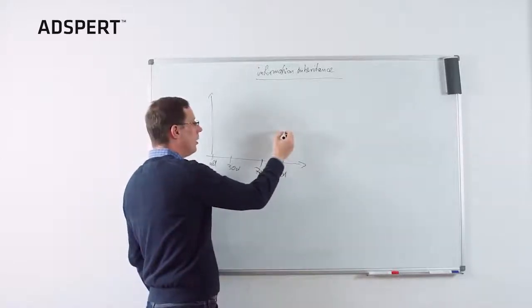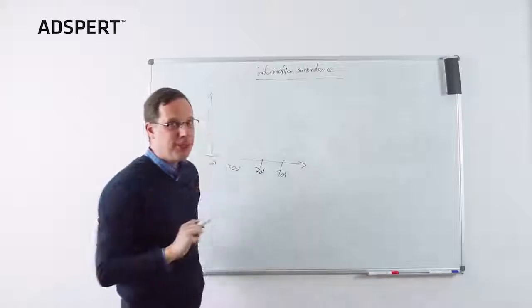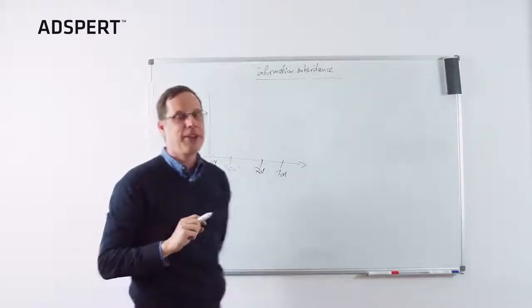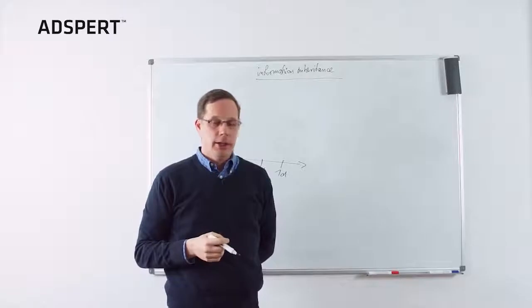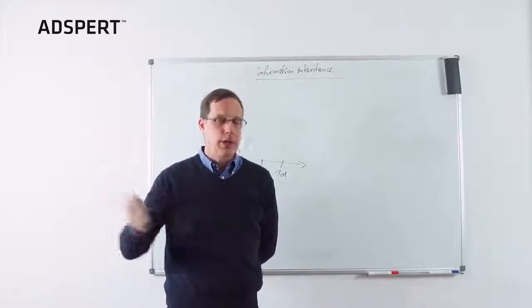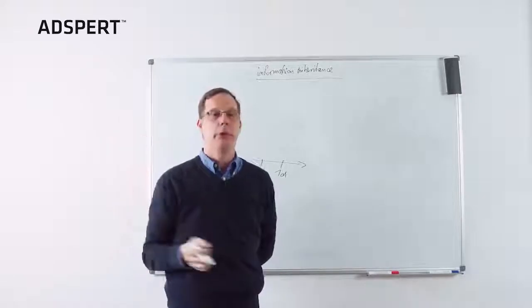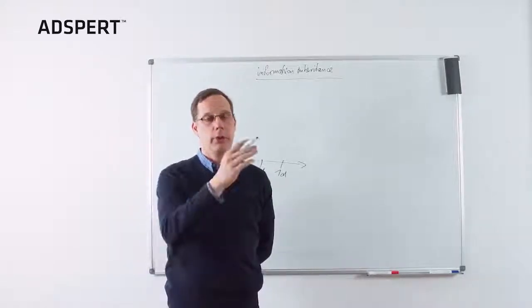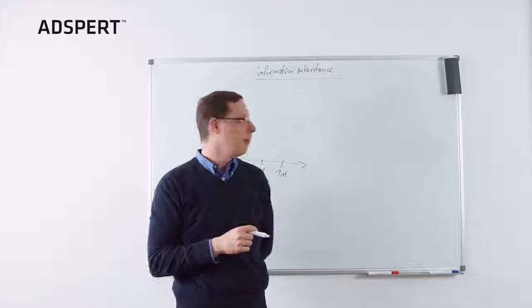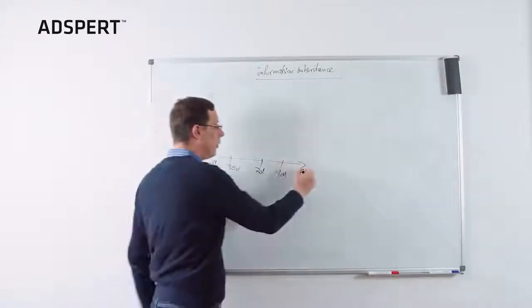The second possibility instead of aggregating over time would be to aggregate over the account hierarchy. So sum up all clicks and conversions of the corresponding ad group, then of course you will receive more observations, or the corresponding campaign or even the complete account. And we will do both, but let's focus on the time first.